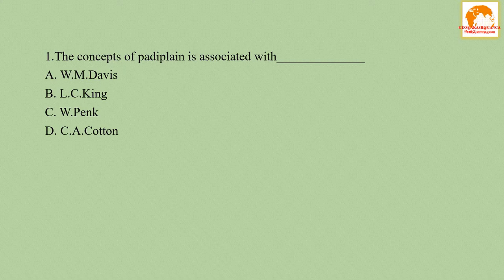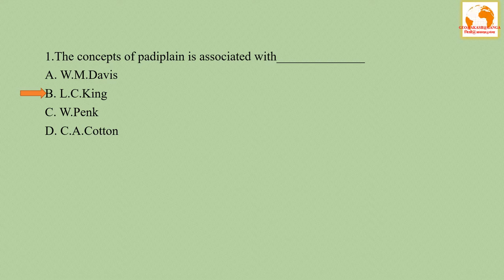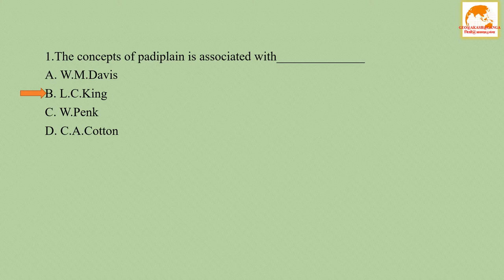The concept of pedi plane is associated with: option A - WM Davis, option B - LC King, option C - W Penk, option D - CA Cotton. The correct answer is option B, LC King. Option A, WM Davis, is an American geomorphologist who postulated the concept of geographical cycle, popularly known as the cycle of erosion. Option C, W Penk, is noted for criticizing key elements of Davis's cycle of erosion and postulated his theory on landscape development. Option D, CA Cotton, is a New Zealand geomorphologist whose theory is on savannah planation. LC King is a geologist who postulated the concept of pedi plane, also known as pedi planation.